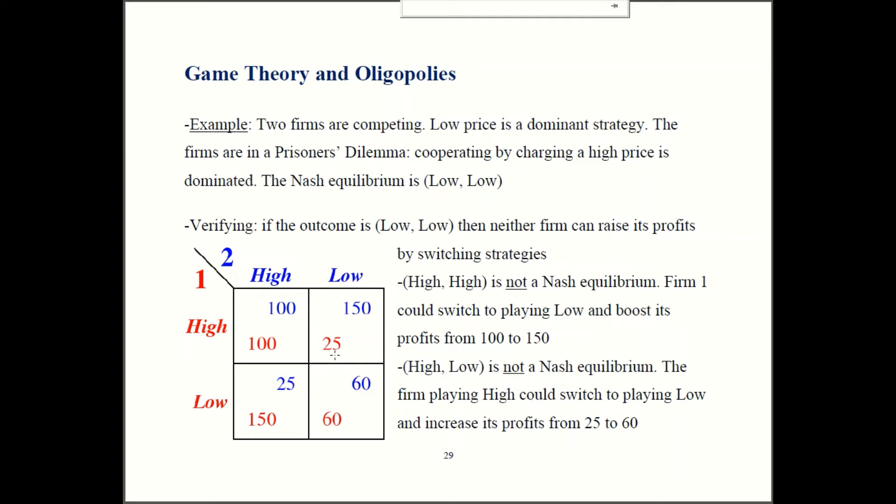Similarly, firm two is also not going to want to switch. In this case, they're both playing low-low, they're both getting 60. If firm two switches to playing high, they're going to be moving to this column over here. Firm two's payoffs are in blue. That means their profit falls from 60 to 25. They do not like that. So they are not going to want to switch.